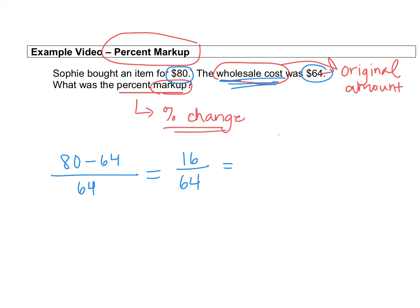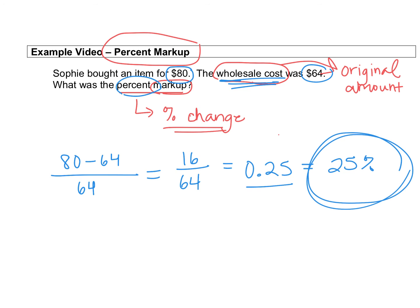We take 16 divided by 64 and get 0.25. Our answer should be a percent, so we move the decimal two spots to the right to turn it into a percent. The percent markup is 25%. We don't have to say increase or decrease because percent markup already tells us it was a percent increase — we just had to figure out what the percent was.